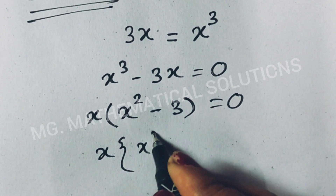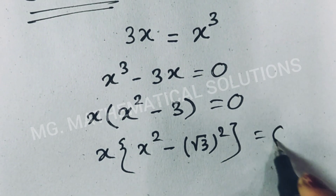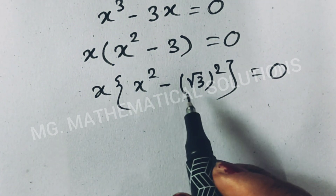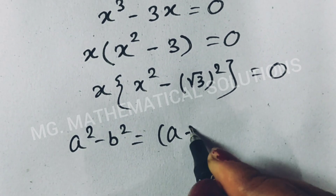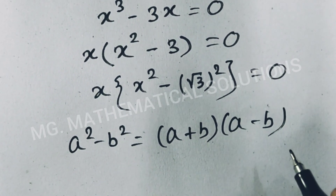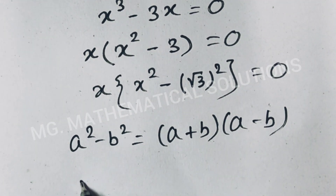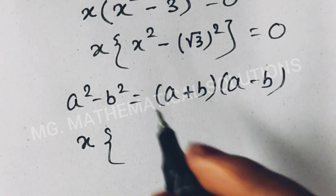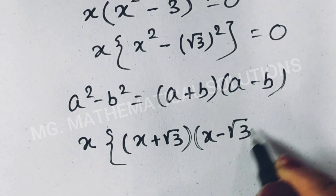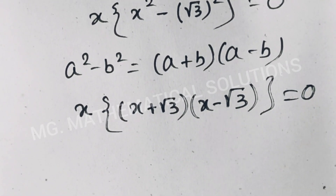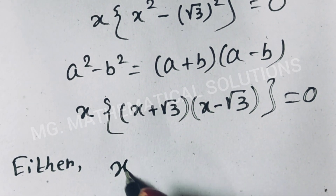We can write x squared minus 3 as x squared minus root 3 whole squared, which equals 0. Now we use the formula a squared minus b squared equals (a plus b)(a minus b), where a means x and b means root 3. So x times (x plus root 3) times (x minus root 3) equals 0.